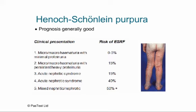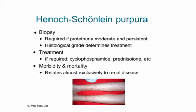Children with HSP requiring biopsy are those with moderate to heavy persistent proteinuria, usually after 2–3 weeks. Histological grade determines treatment. If treatment is necessary, cyclophosphamide and prednisolone are often used, followed by a year of azathioprine and alternate-day prednisolone. The morbidity and mortality of HSP relates almost exclusively to the renal disease — there are no long-term sequelae of gut, joint, or rash involvement.